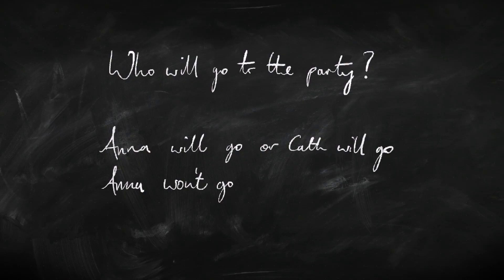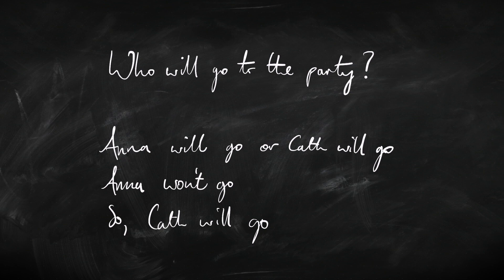Here's another example. Who's going to go to the party? Anna will go or Kath will go. But Anna won't go, so Kath will go. Because either Anna or Kath will go, but Anna won't go, we've concluded Kath will go.